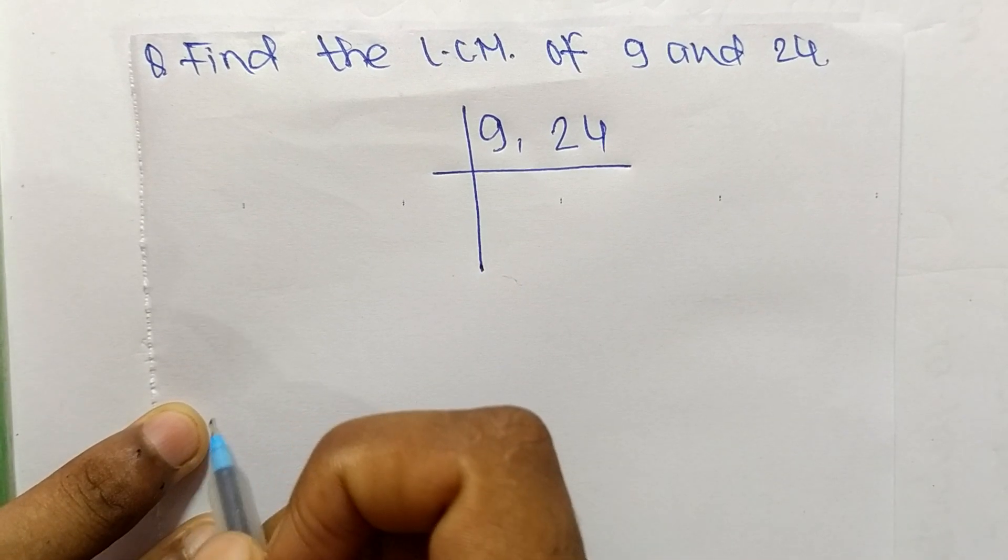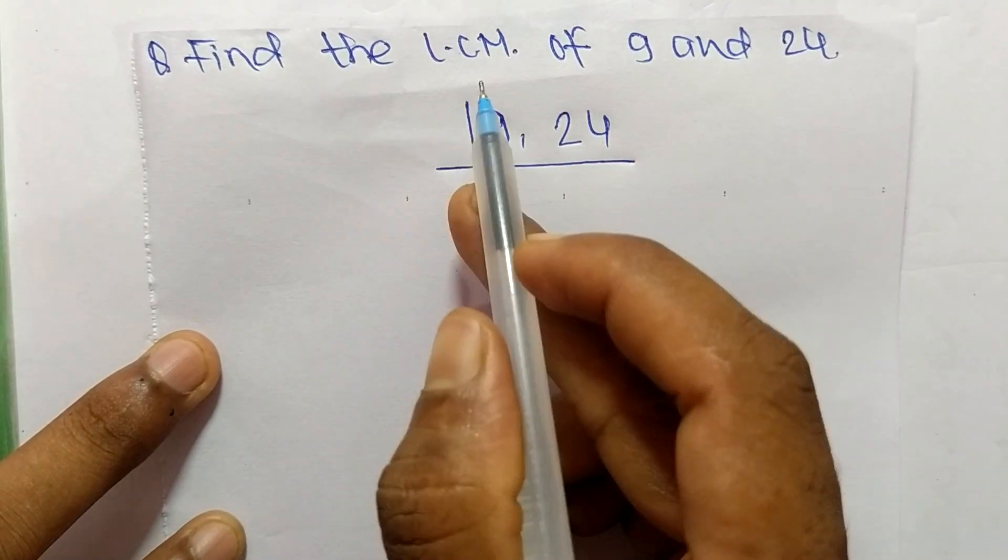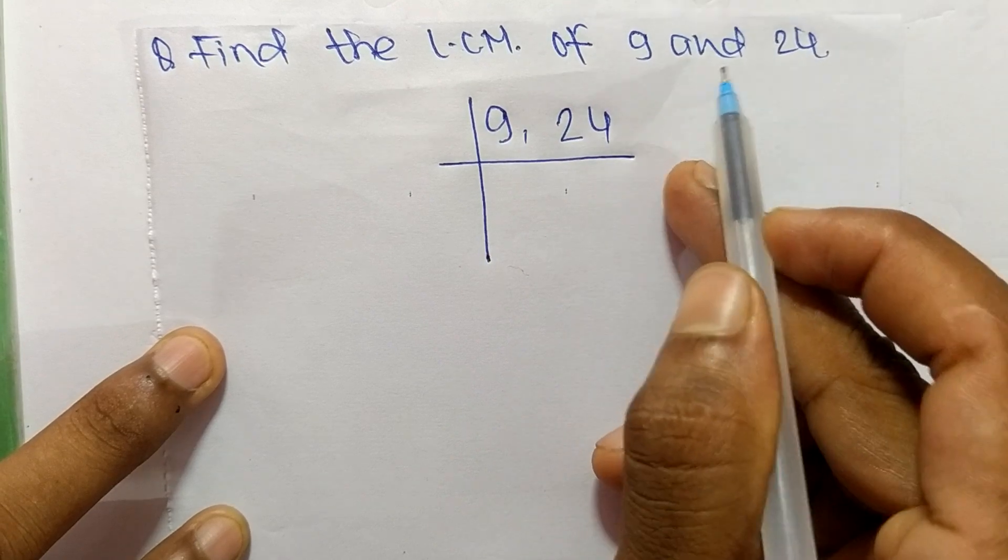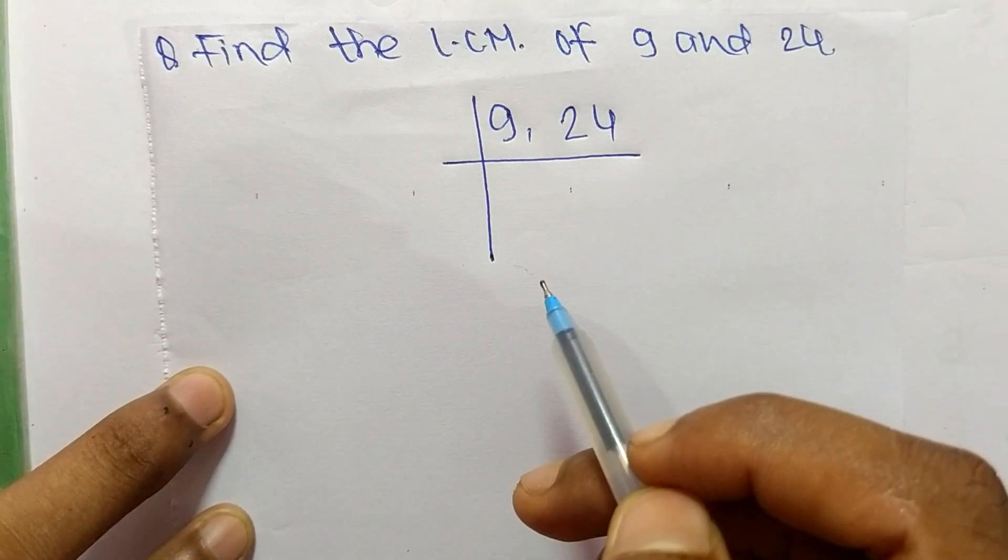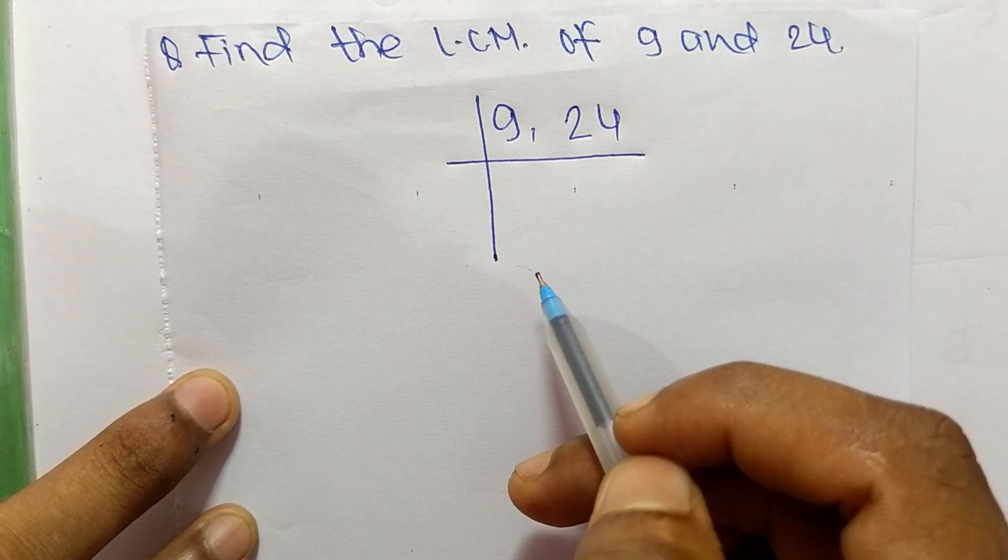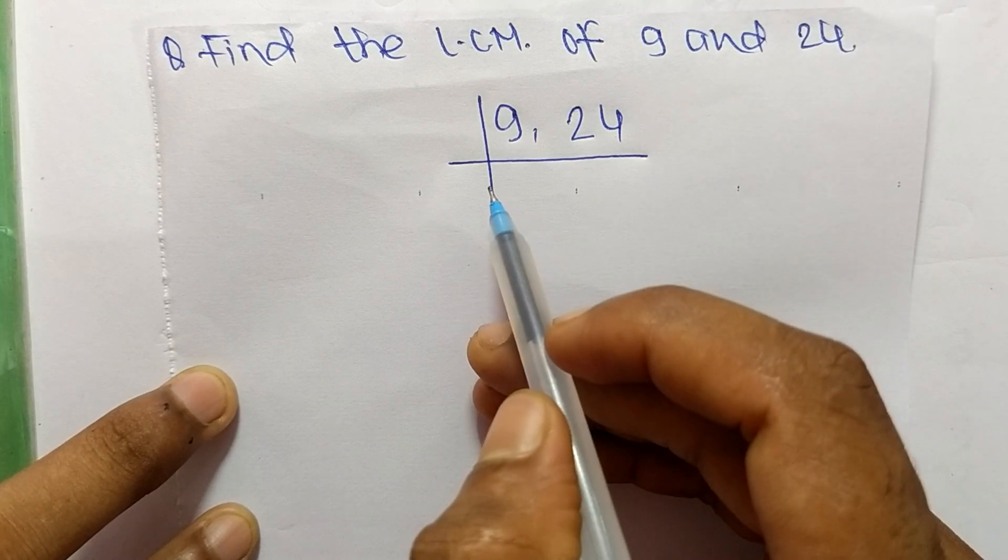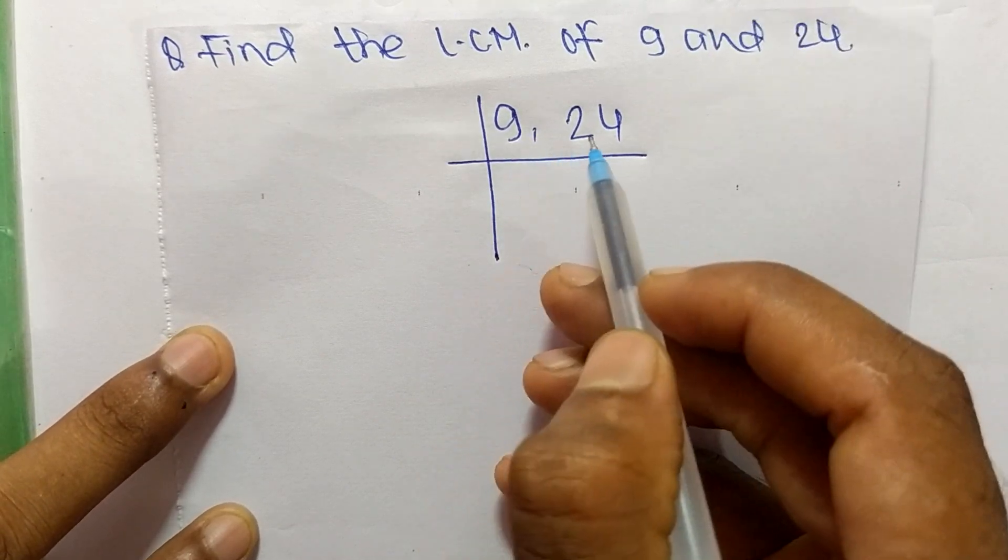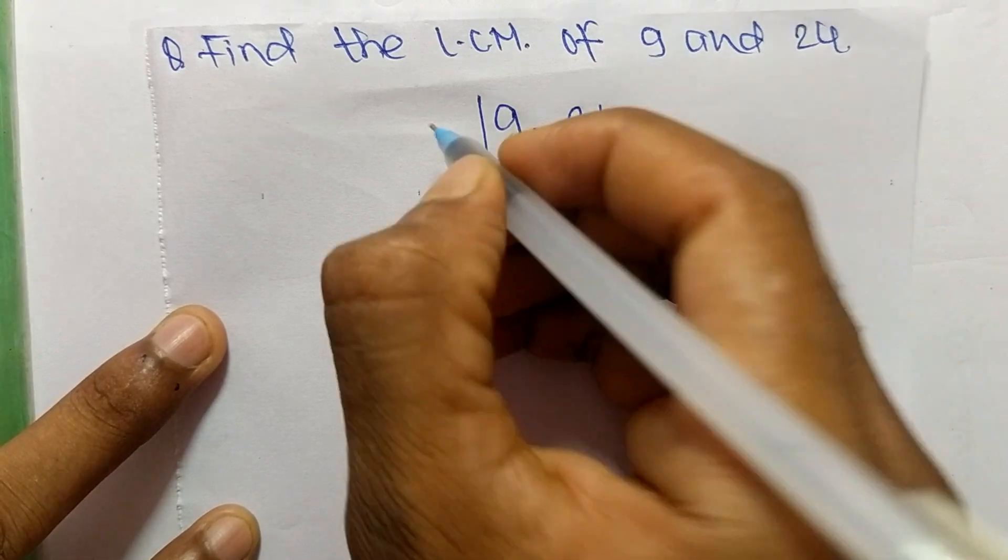Today in this video we shall learn to find the LCM of 9 and 24. To find LCM, first we have to choose the lowest number which can exactly divide 9 and 24. The number is 3.